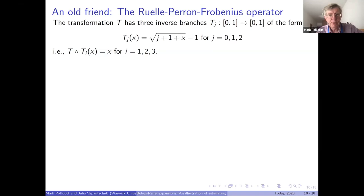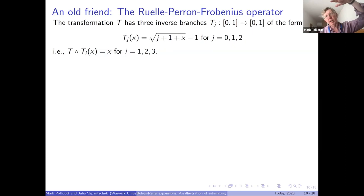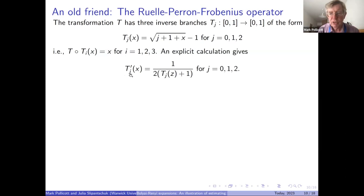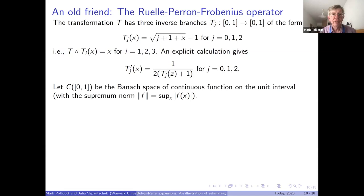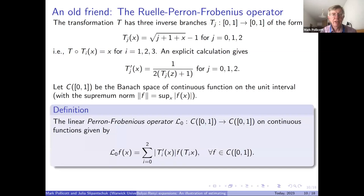We have an expanding map, and to define the Perron-Frobenius operator we look at inverse branches. The inverse branches going backwards for the transformation are three maps, where j equals zero, one, or two — just take the original graph and reflect it along the x equals y axis. Given these three inverse branches, which are contractions on the unit interval, we can compute their derivatives. The operator acts on the space of continuous functions with the supremum norm.